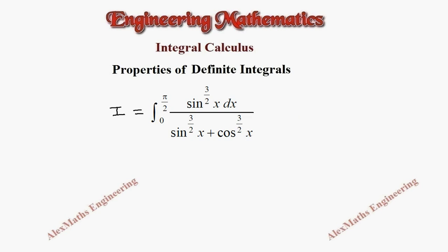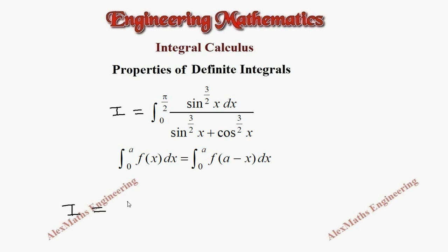We are going to apply this property: the integral from 0 to a of f(x) dx equals the integral from 0 to a of f(a minus x) dx — that is, replacing x with the upper limit minus x. So our integral I will become integral from 0 to π/2, but wherever x appears we substitute a minus x.